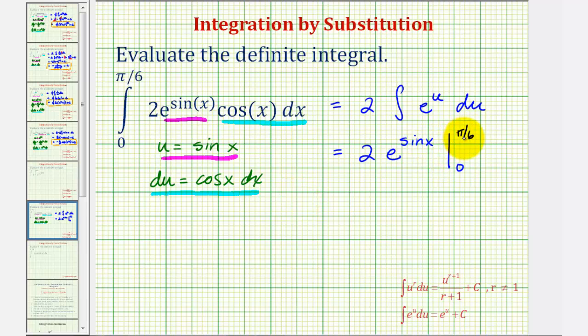When x equals pi over six, we'll have two times e raised to the power of sine pi over six, and then minus two times e raised to the power of sine zero.